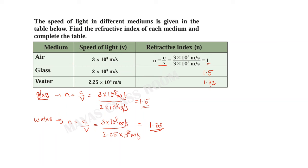The refractive index depends on the optical density. Optical density is related to the speed of light in the medium. The refractive index is different for different mediums because it depends on the optical density, which is the speed of light in that medium.